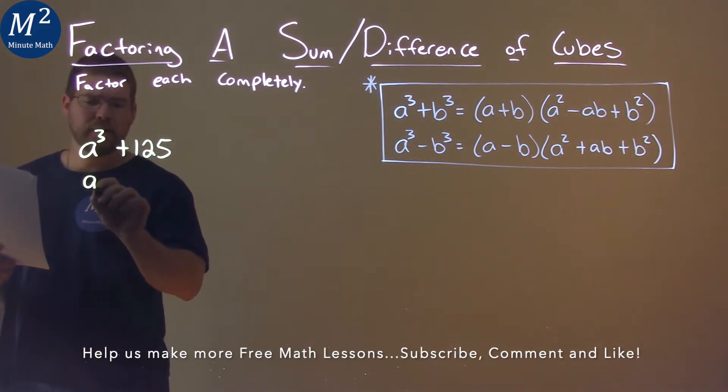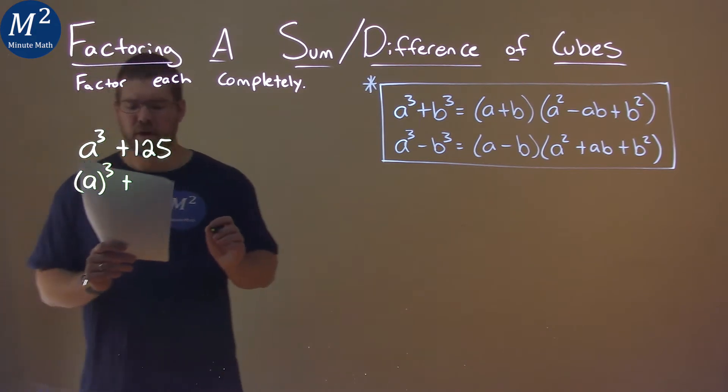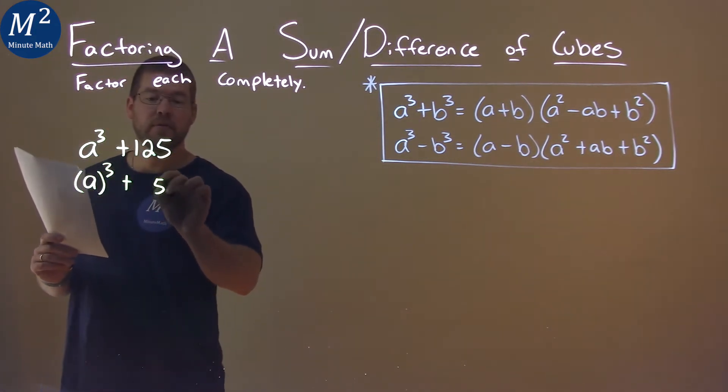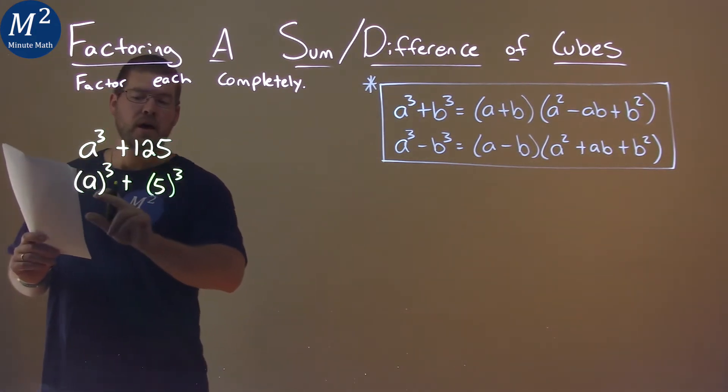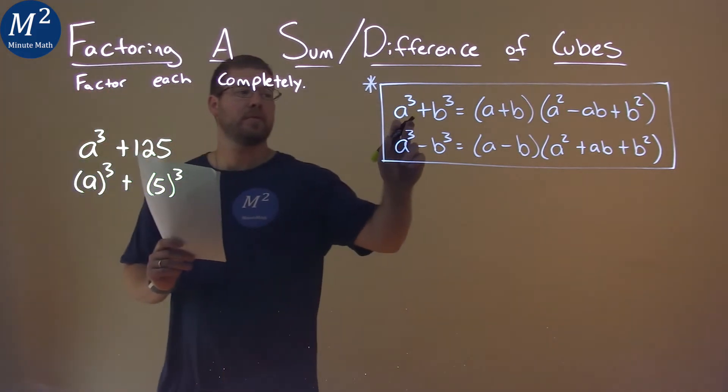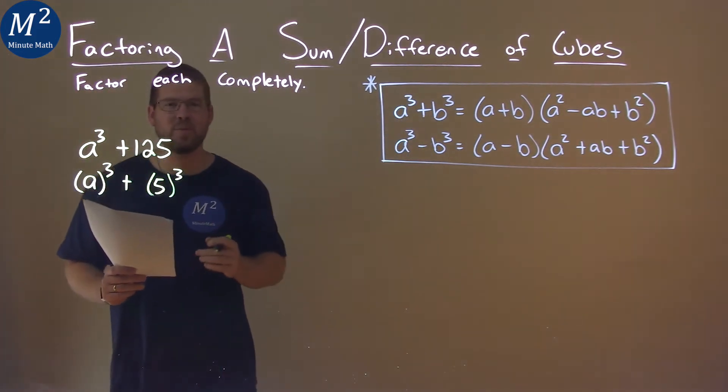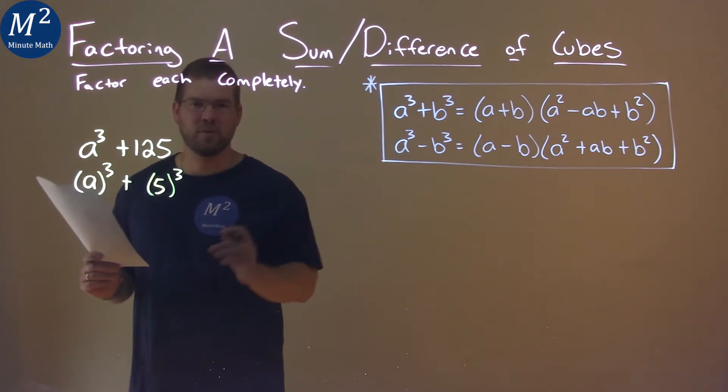a to the third power is a to the third, and 125 we know is 5 cubed. As you can see it's now set up the same way as our sum of cubes formula. So let's use that formula.